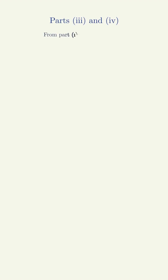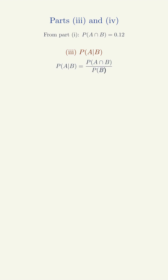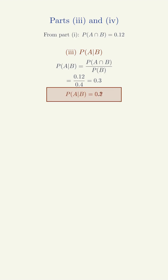Parts 3 and 4. From Part 1, P of A intersection B equals 0.12. Part 3: P of A given B equals P of A intersection B over P of B equals 0.12 over 0.4 equals 0.3.